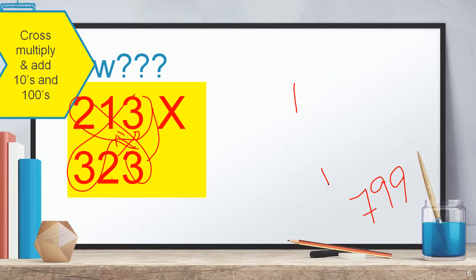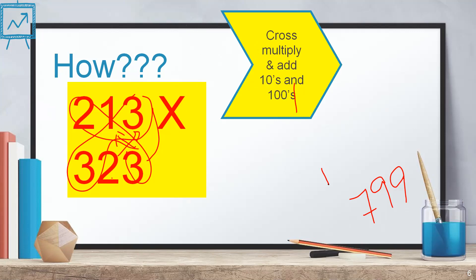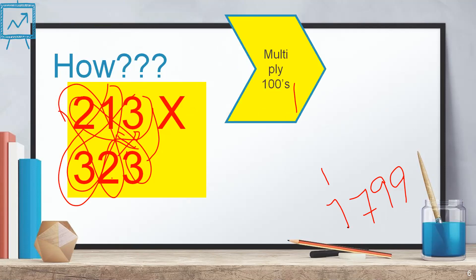What is the next step? Next is cross-multiply and add 10s and 100s. That is 10s and 100s means these two numbers. That is 2 times 2 is 4. 3 into 1 is 3. 4 plus 3 is 7. Then last step is multiply the 100s place. 2 times 3 is 6. So your answer is 68,799. This is how I have written the answer in the beginning.